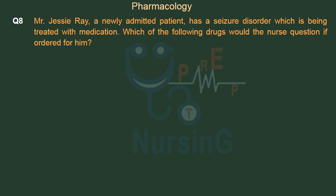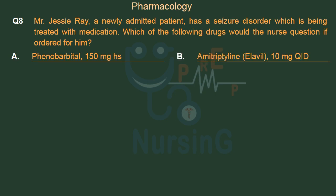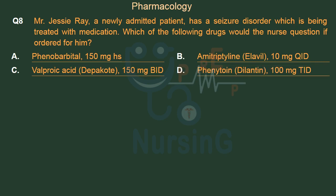Mr. Jesse Ray, a newly admitted patient, has a seizure disorder which is being treated with medication. Which of the following drugs would the nurse question if ordered for him? Option A: Phenobarbital 150mg HS. Option B: Amitriptyline (Elavil) 10mg QID. Option C: Valproic acid (Depakote) 150mg BID. Option D: Phenytoin (Dilantin) 100mg TID. The right answer is Option B — Amitriptyline (Elavil) 10mg QID.